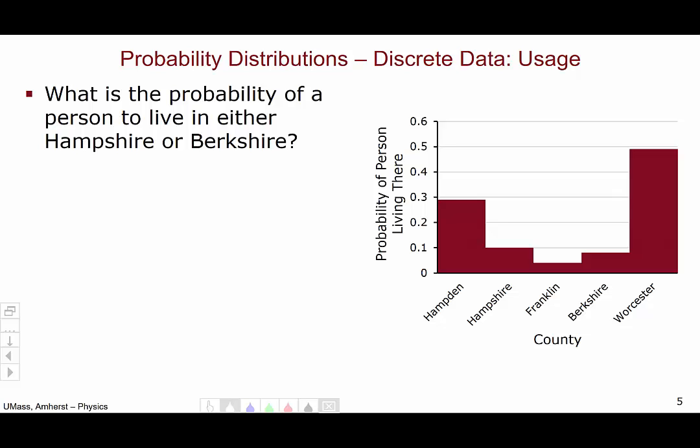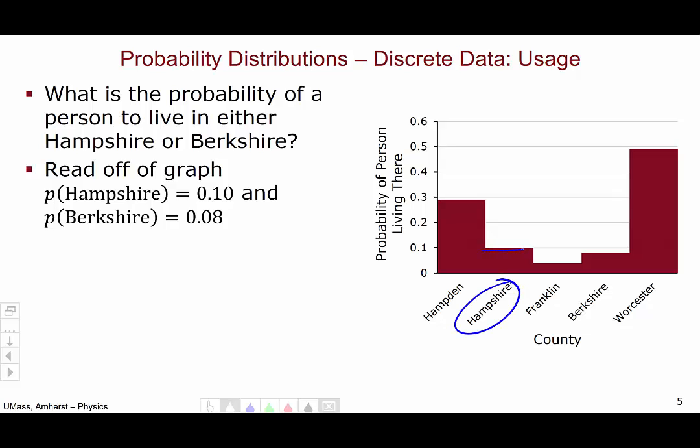So let's begin with a question. As an example, what is the probability of a person who lives in western Massachusetts to live in either Hampshire or Berkshire counties? We can read off of the graph that the probability of a person living in Hampshire county is 10%, 0.10, while the probability of a person living in Berkshire county is a little bit less, 0.08.